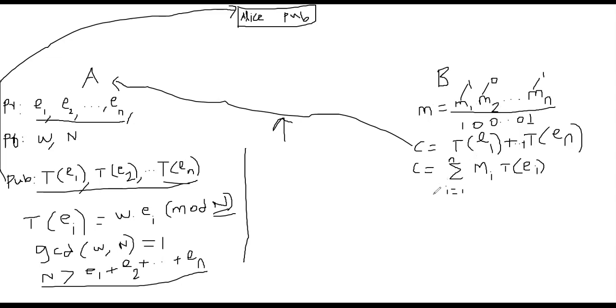So basically, Alice is receiving this c, which is linear combination of the weights. Some elements can be 0 or 1. That means you don't like that particular bit. You don't want to send that particular bit. Essentially, that's the meaning. Suppose in this case, m1 will be 1. And the mn will be 1. Other than that, all of the others are 0. So now, she's going to receive this c from Bob.